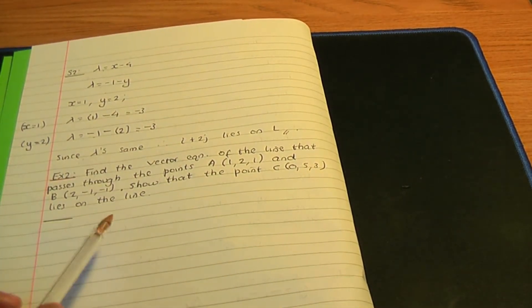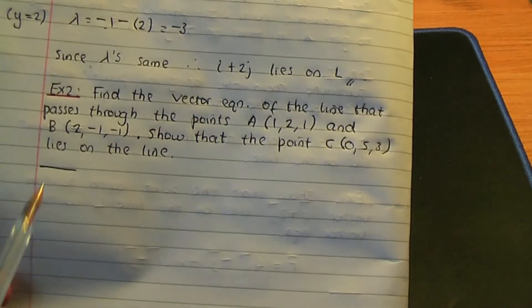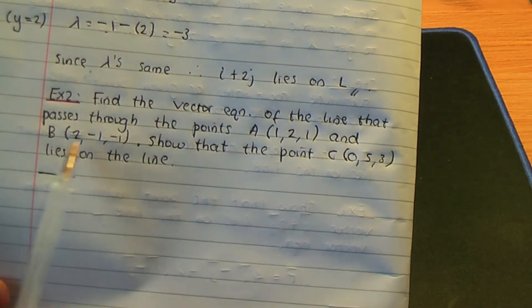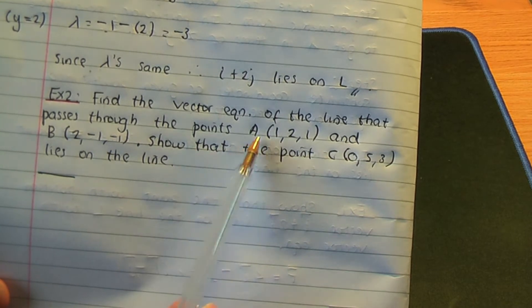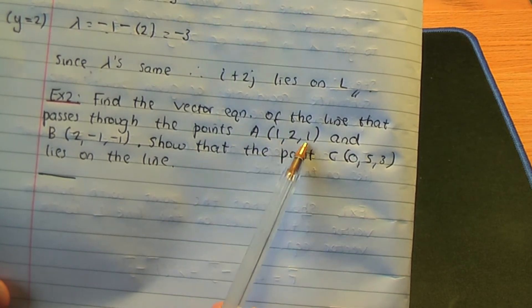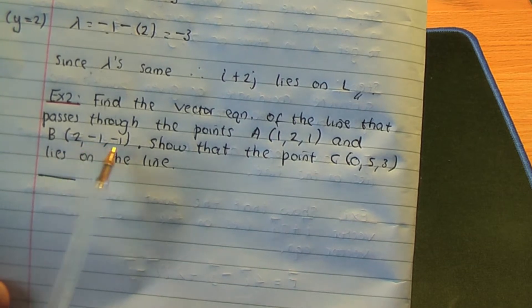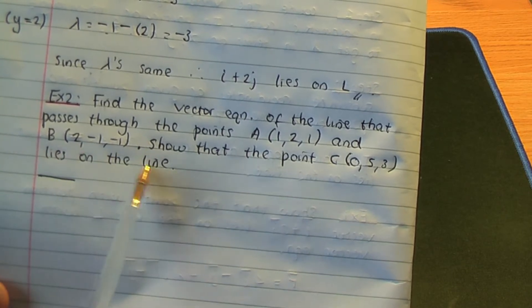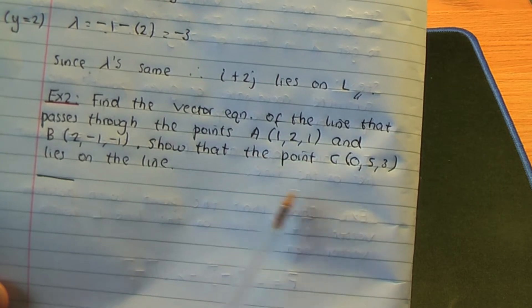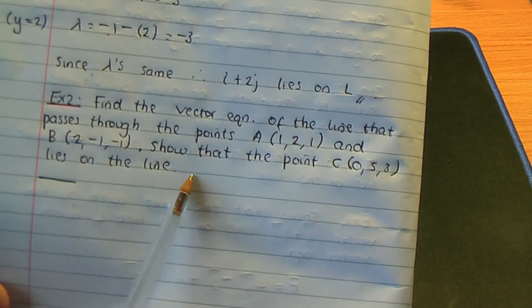So let's go over this question. Find the vector equation of the line that passes through the points A with coordinates (1, 2, 1) and B with coordinates (2, -1, -1). In the second part, show that the point C having coordinates (0, 5, 3) lies on the line.